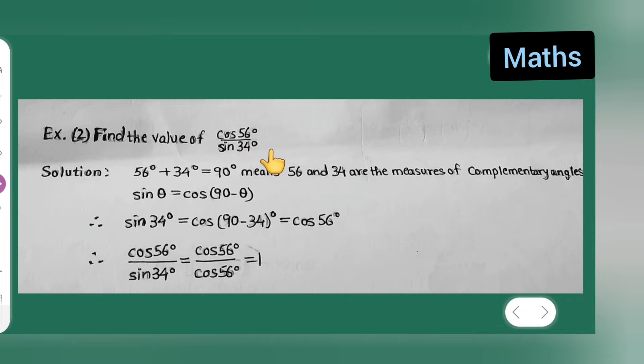Solution: 56 degree plus, now add these two numbers. 56 degree plus 34 degree is equal to 90 degree.